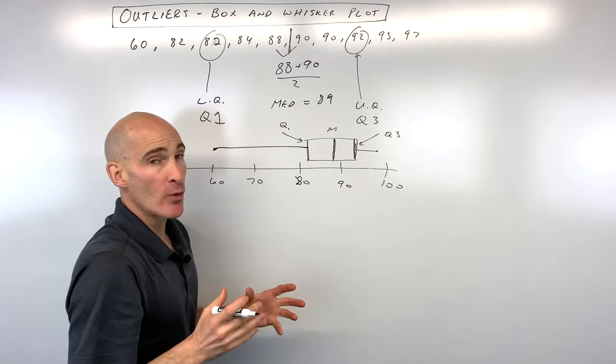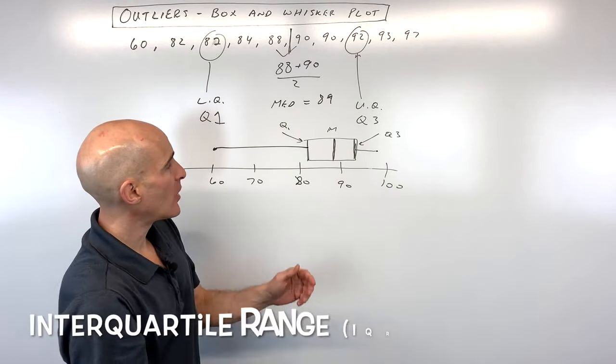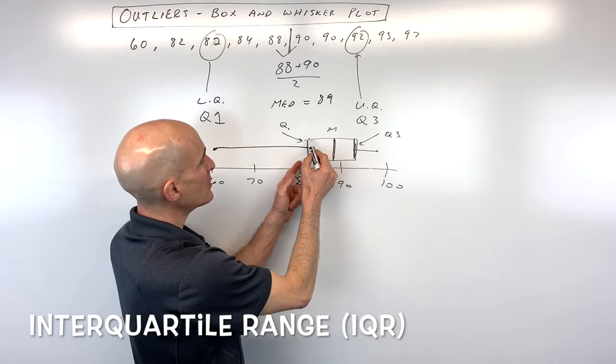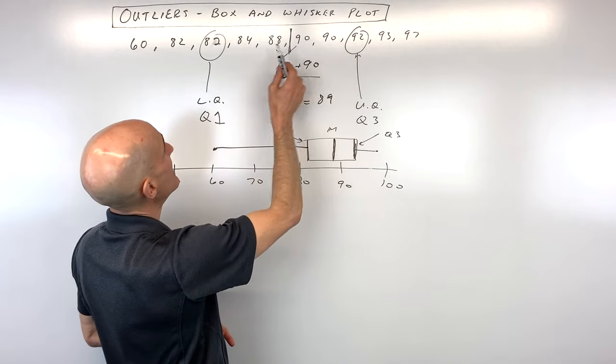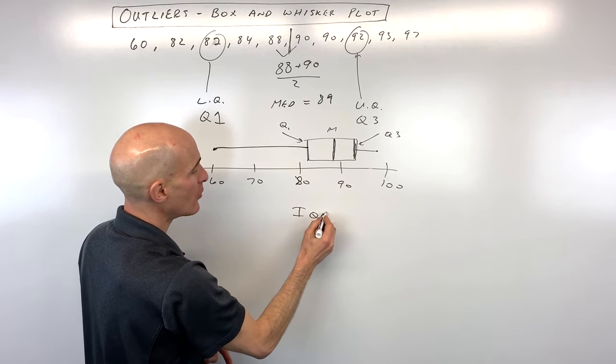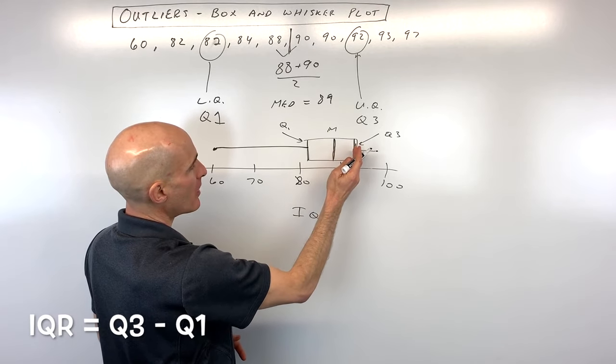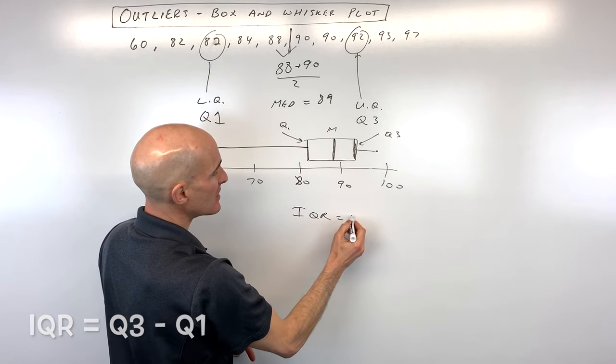So what we want to do is we want to identify the interquartile range. So that's going to be Q3 minus Q1. So in this case, it's 92 minus 82. So our interquartile range, our upper quartile minus our lower quartile, comes out to 10.